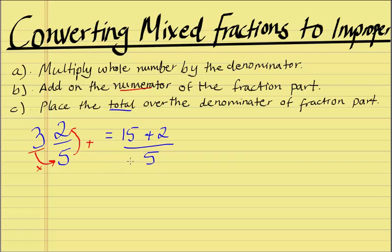and write it like that. Then, 15 plus 2 is 17. And we keep our original denominator. That's as simple as it gets.